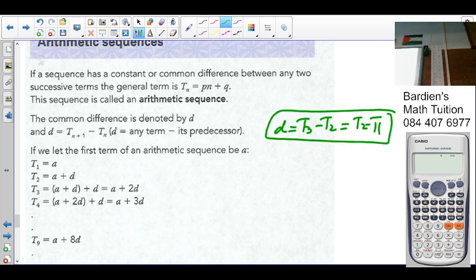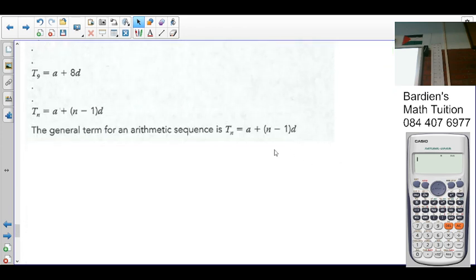If we let the first term of an arithmetic sequence be a, then we've got a, a plus d, and so on. They discovered the general formula that we are currently using, which is Tn equals a plus (n minus 1)d. The full explanation can be found in the description box below.